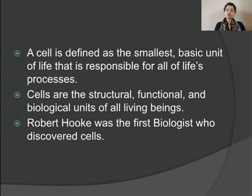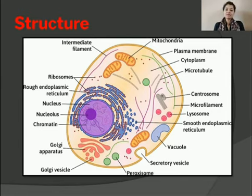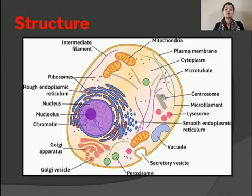The first biologist who discovered the cell was Robert Hooke. A human body develops from a single cell termed as the zygote, which results from the fusion of the ovum — the female egg cell — and the spermatozoa — the male sex cells. After the fusion and formation of the zygote, cell division follows, and as a result the fetus grows and different parts of the human body develop.